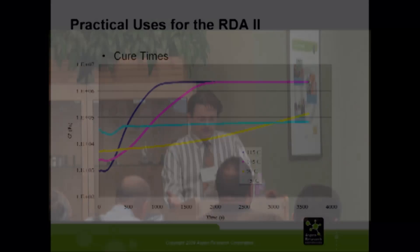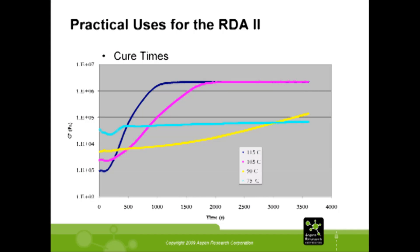In some cases, you have a reactive material. You can also use the DMA to monitor the cure of the reactive material. These are some epoxies that were cured at different temperatures. The curve on top was at 115 degrees C. As you would expect, that cured the fastest, because it got up and flattened out at the top very quickly.